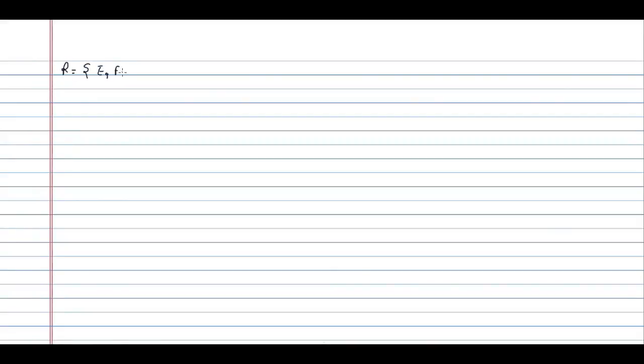Next question. They are asking which of the following is the key for relation R, assuming the relation R has attributes E, F, G, H, I, J, K, L, M, and N. These are the functional dependencies which are given.